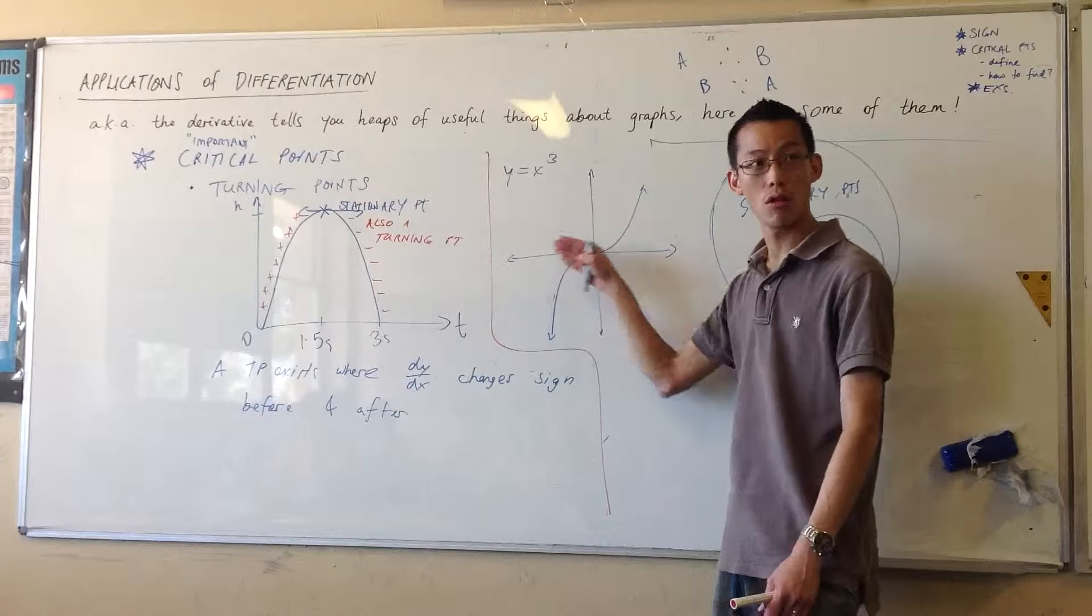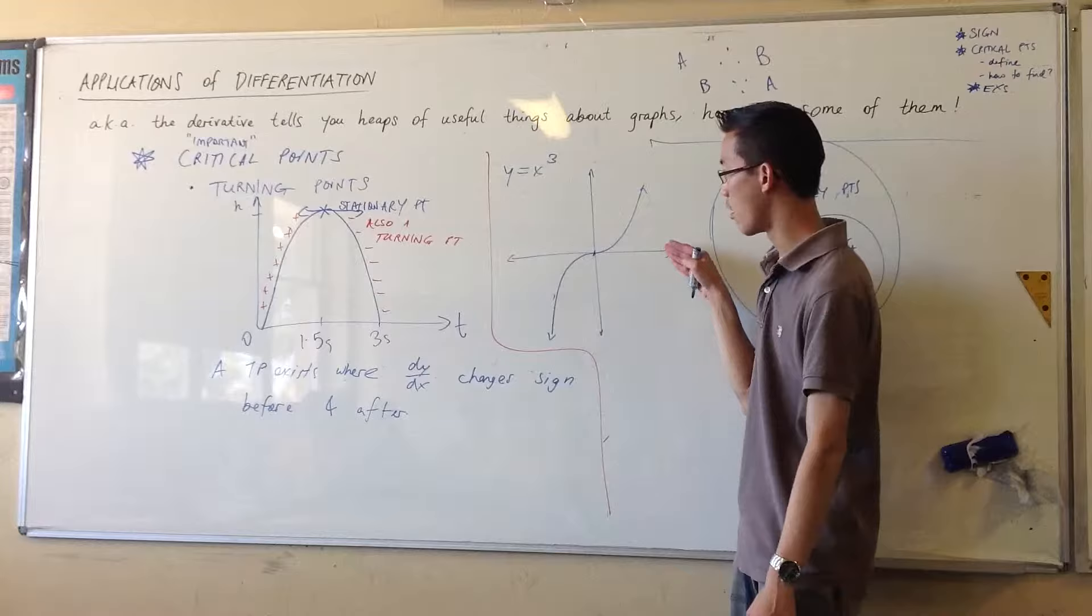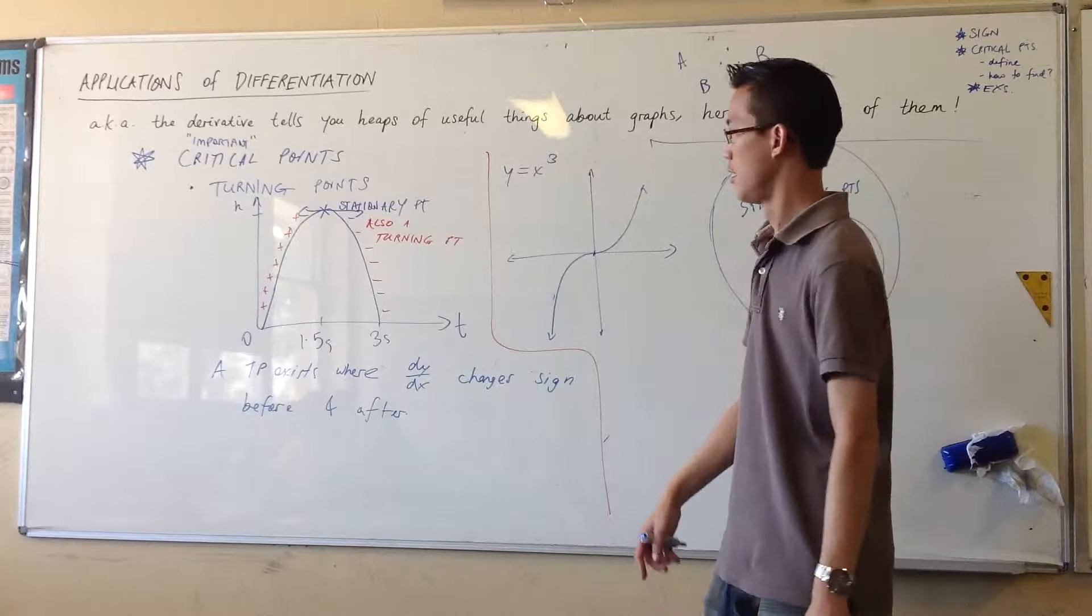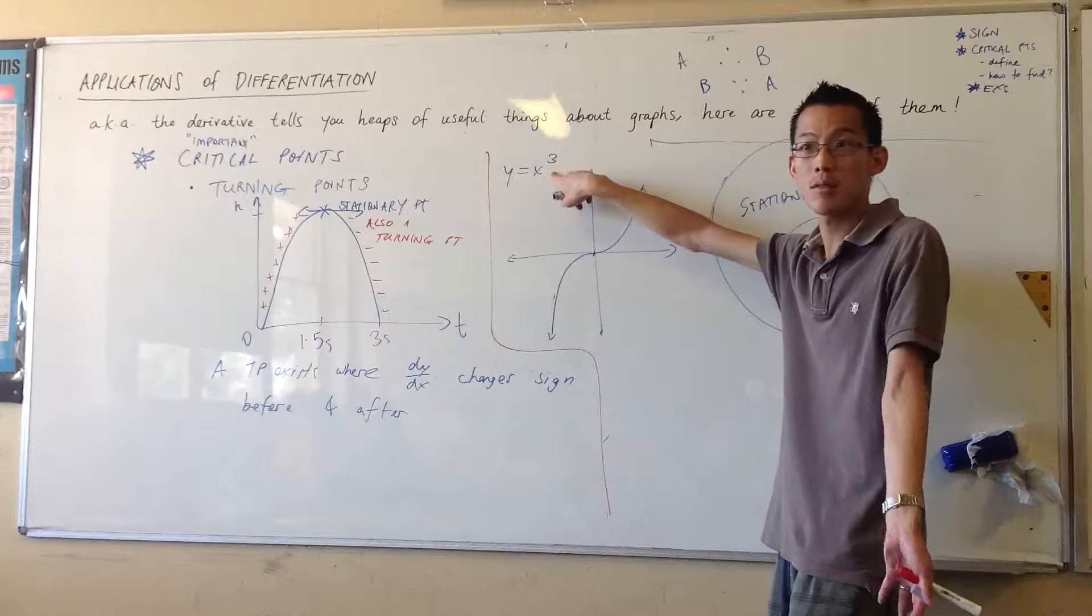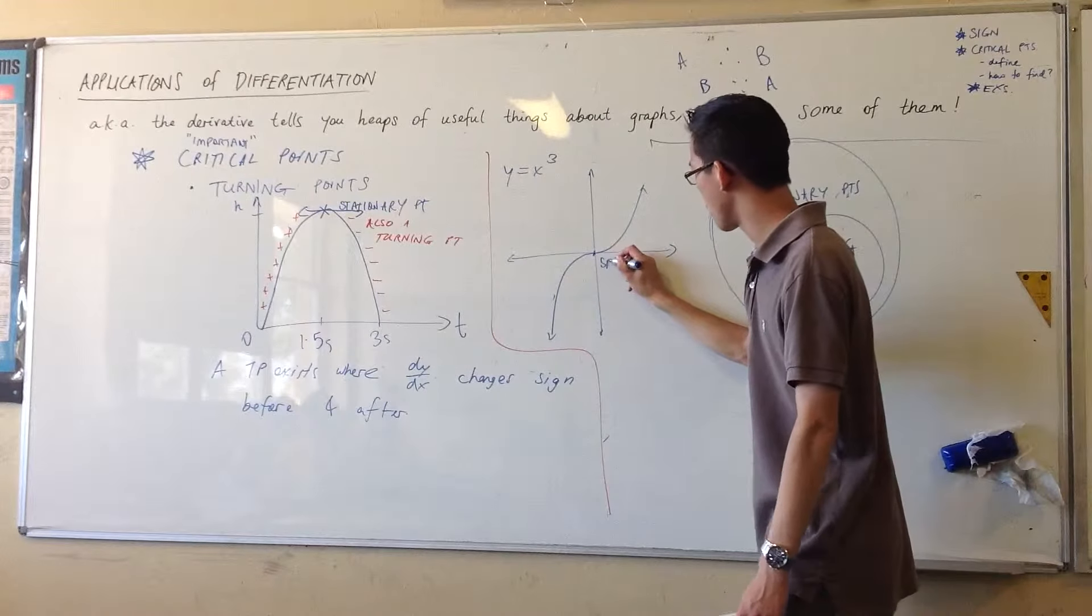If I were to draw a tangent, it would be horizontal. And if you find the gradient, the derivative is 3x squared. Sure enough, when x equals 0, the derivative will be 0. So therefore, this is a stationary point.